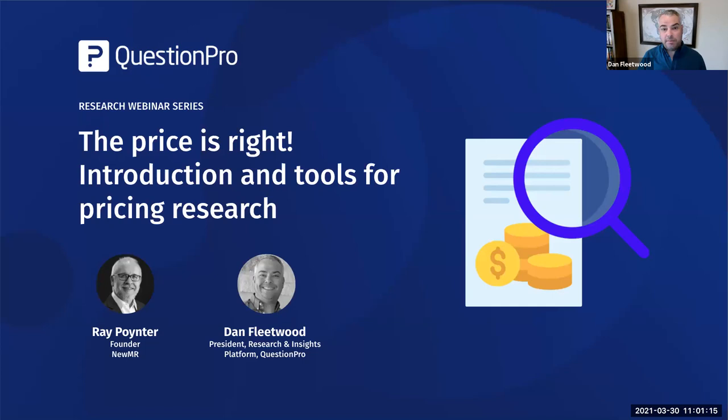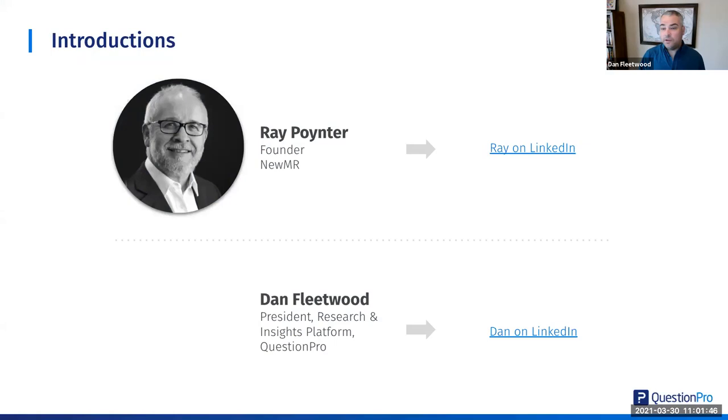All right, I think we got some people still joining, but let's go ahead and get started. We have a jam-packed hour, and I want to make sure that there is enough time for everything here. So welcome to our research webinar series. This is around the Price is Right — an introduction and tools for pricing research. Ray Poynter from the New MR will be speaking, and I'll be speaking as well around QuestionPro and some of the different features and functionalities that make up our pricing analytics suite.